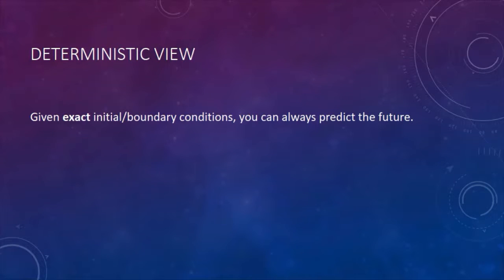So Newton's success in describing the motion of planets and also terrestrial objects leads to some kind of deterministic view. Given exact initial boundary conditions, you can always predict the future. But this only applies to specific set of problems, because in practice you may have some inaccurate measurement, so you don't have accurate initial conditions.